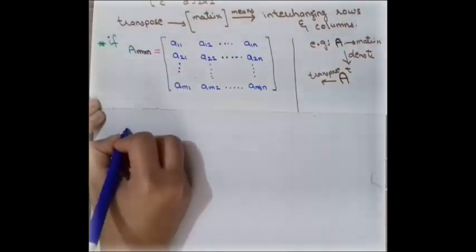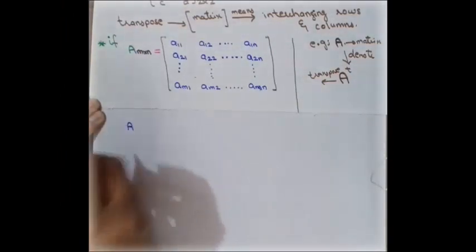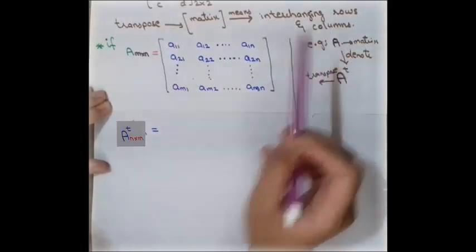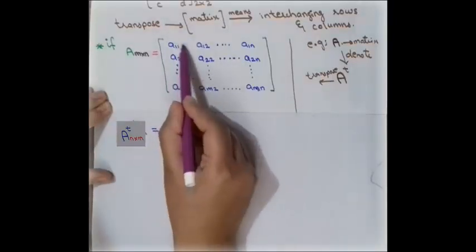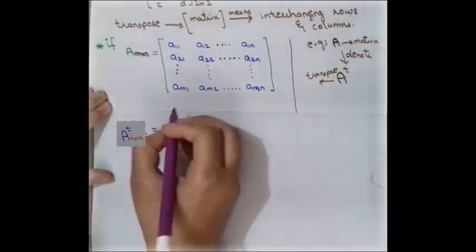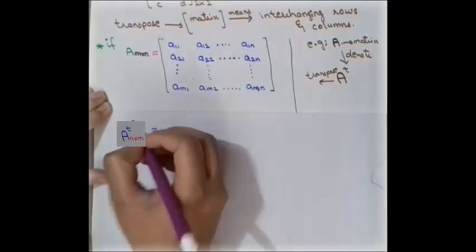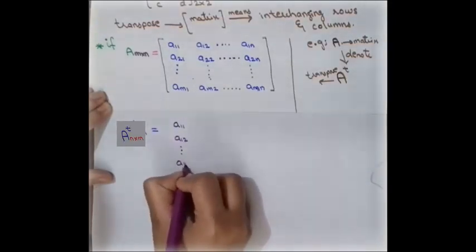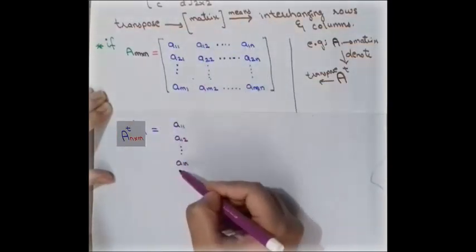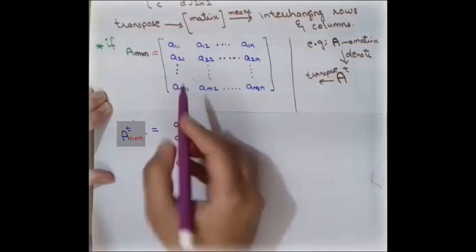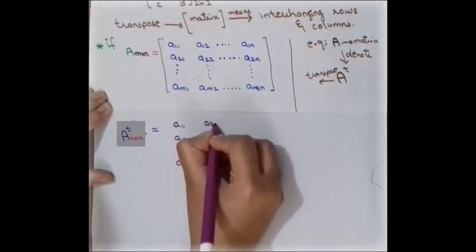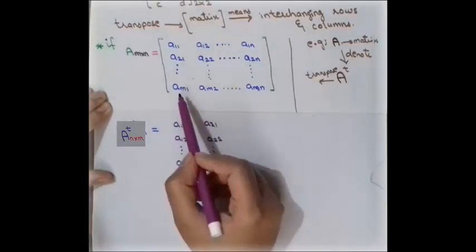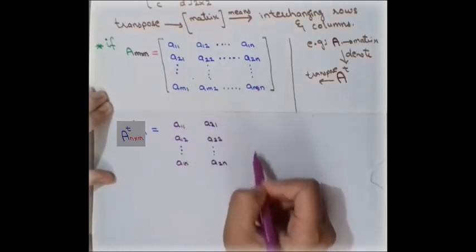To write the transpose, we use a small T in the superscript. The transpose says interchanging of rows and columns, so the first row of the original matrix becomes the first column of the new matrix. We write a11, a12, and so on — the elements in a row become a column. Similarly, the second row becomes the second column, containing a21, a22, up to a2n, and so on for subsequent rows.